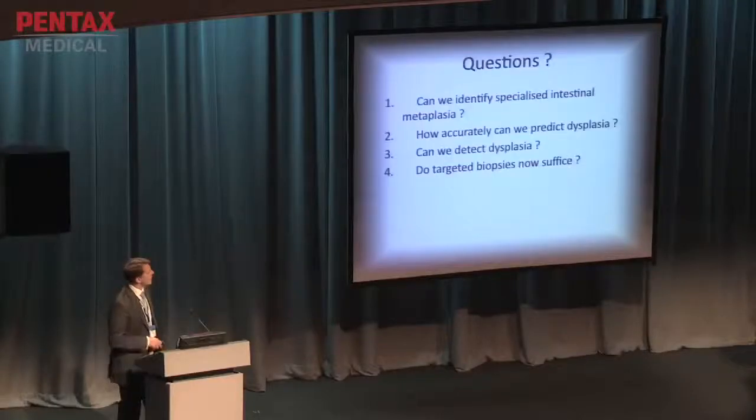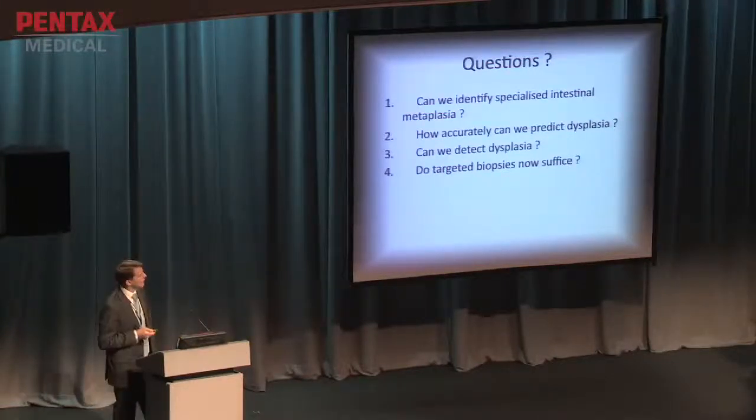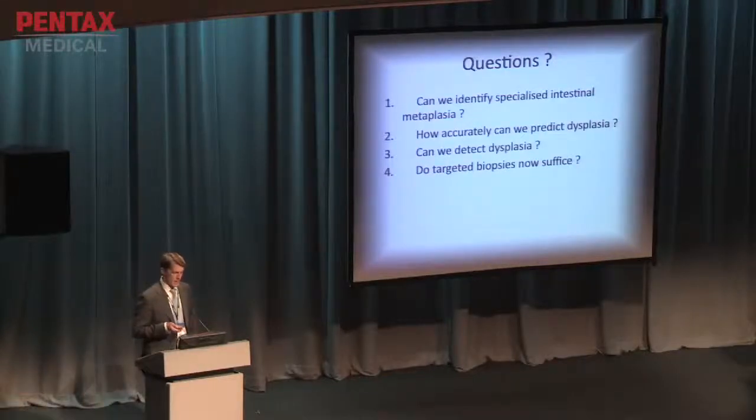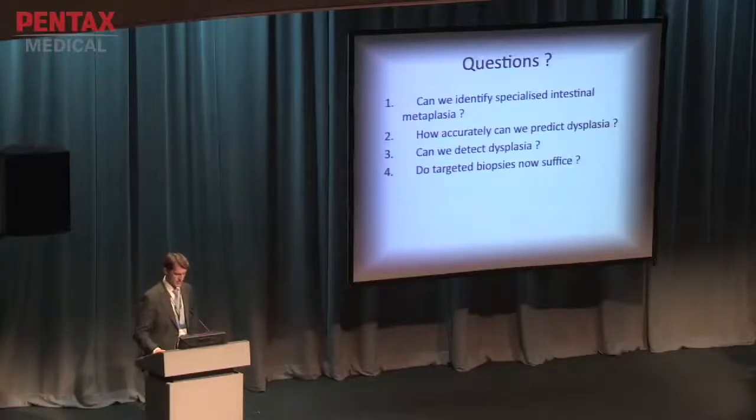I'm going to use Barrett's as an example to describe some of the features we should be looking for. The questions are: whether we can identify specialized intestinal metaplasia with current technology, how accurately we can predict dysplasia, whether we can detect dysplasia in the first place, and whether we can do away with random biopsies and just rely on targeted biopsies. Although it's white light, I don't just use white light in my practice — I will touch on chromoendoscopy and electronic endoscopy.